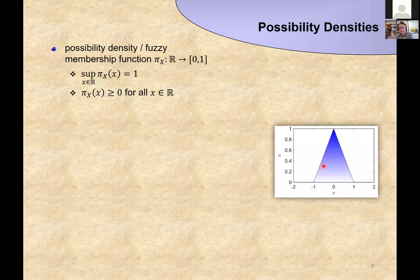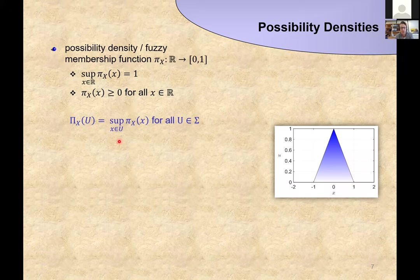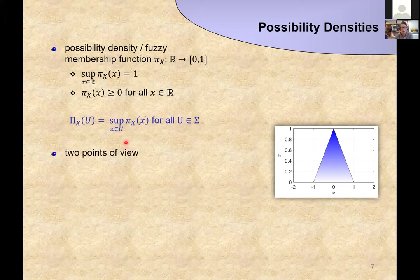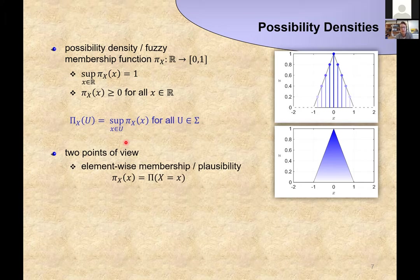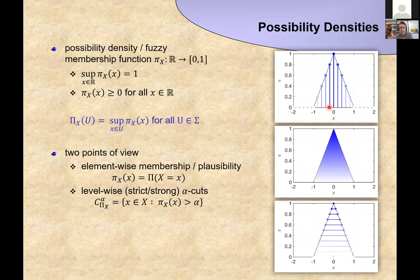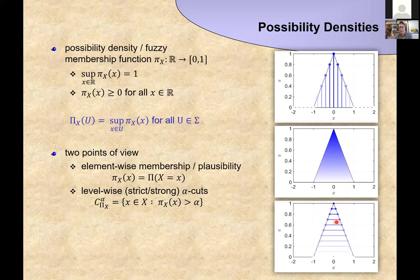The triangular fuzzy number is one such possibility density. We have two important points of view: the element-wise view, giving us the membership value or plausibility that X assumes a given value; and the level-wise view, taking the super-level sets of our possibility density, which gives us the alpha-cuts known in fuzzy set theory. These two views are important because they give us two approaches to possibility calculus and the numerics.